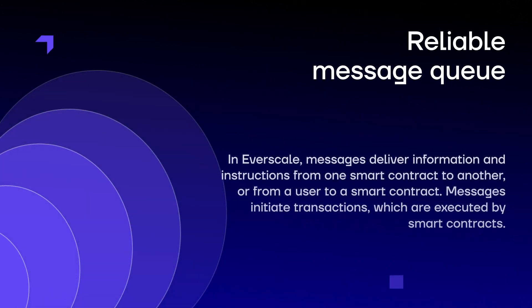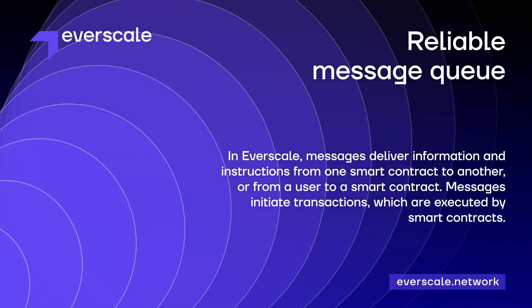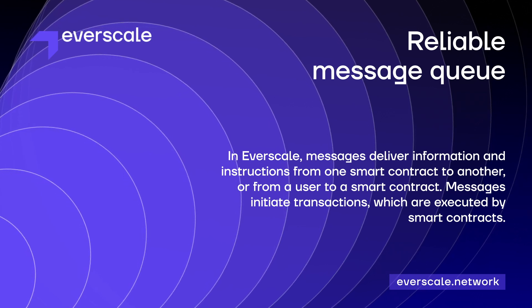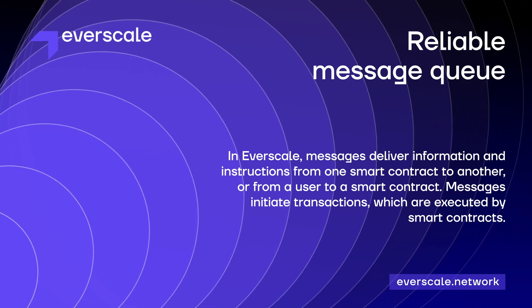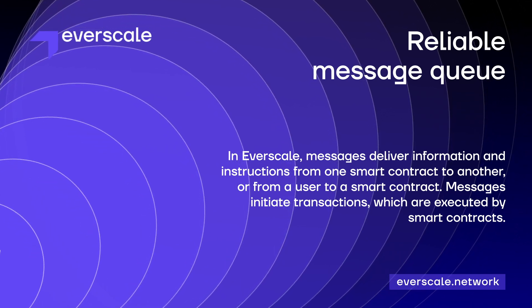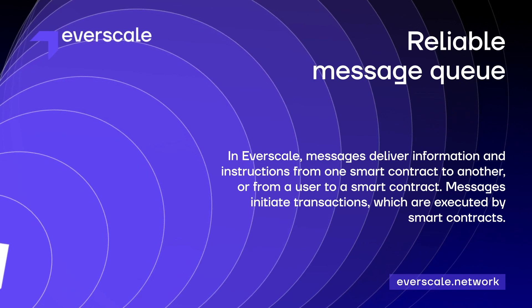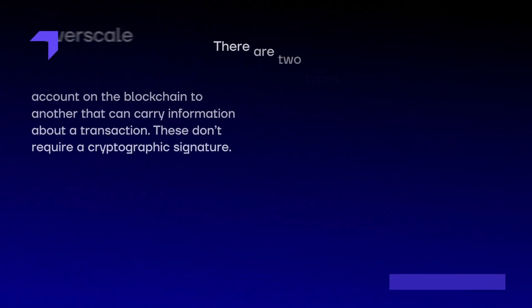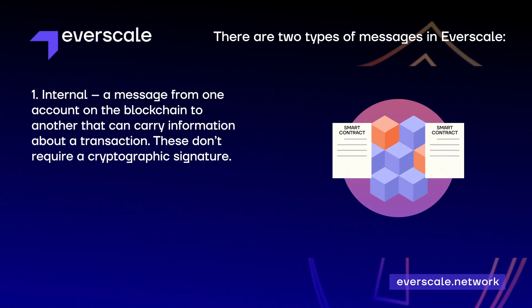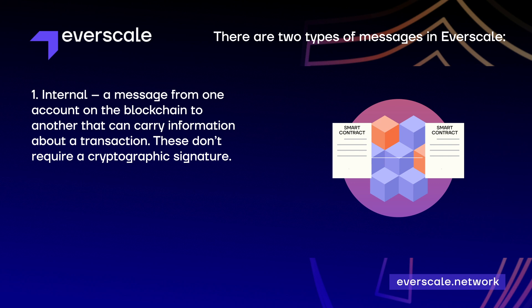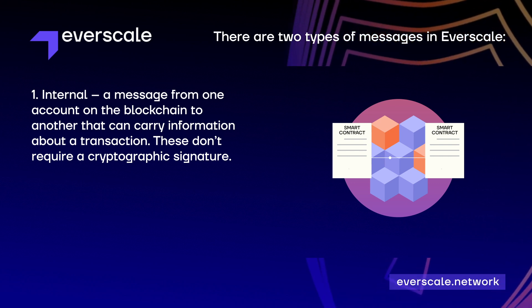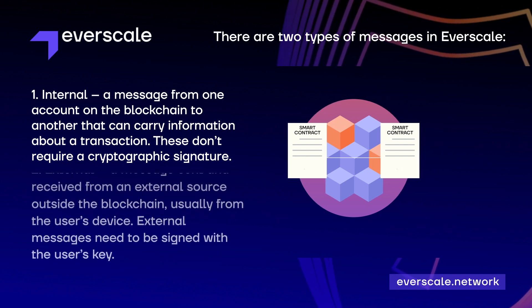Reliable Message Queue. In Everscale, messages deliver information and instructions from one smart contract to another, or from a user to a smart contract. Messages initiate transactions which are executed by smart contracts. There are two types of messages in Everscale. Internal: a message from one account on the blockchain to another that can carry information about a transaction. These don't require a cryptographic signature.